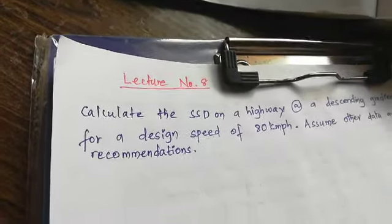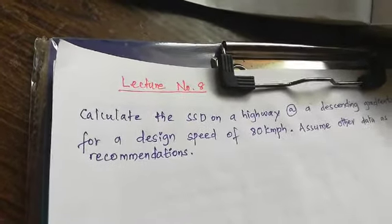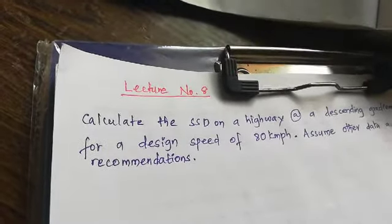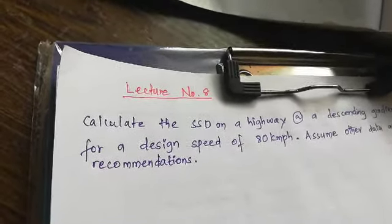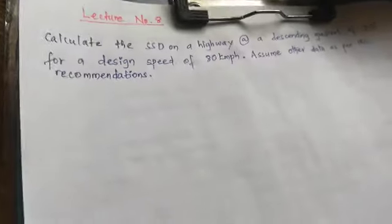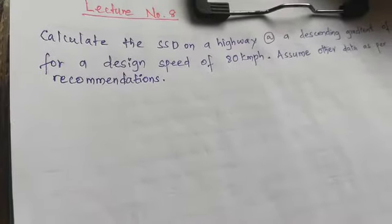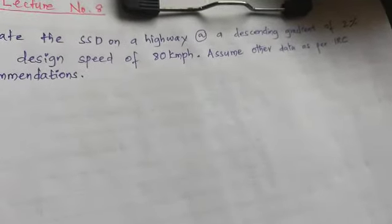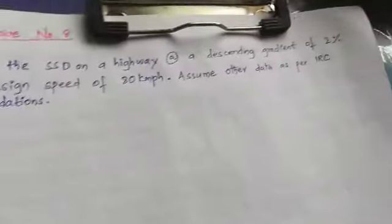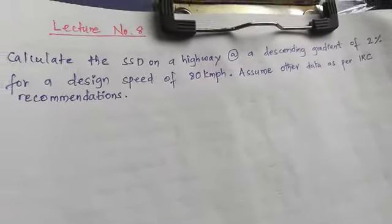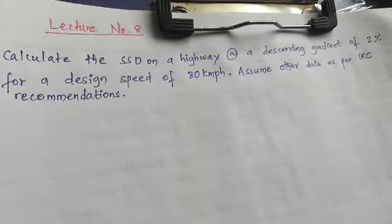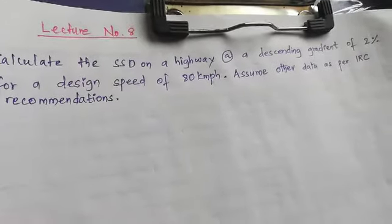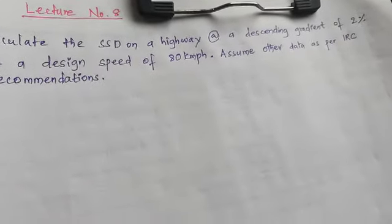Hello everyone, Professor Low here. This is lecture number 3, a continuation of stopping sight distance. Let's see the problem. Calculate the stopping sight distance on a highway at a descending gradient of 2% for a design speed of 80 kmph. Assume other data as per IRC recommendations.